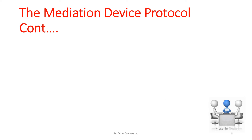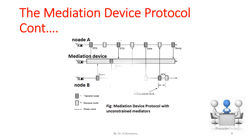Here is the representation of the mediation device protocol. In this, we are having two nodes. In between those two nodes, a mediation device is present. The transmitting node sends RTS to the mediation node and it is being passed to the other node, that is the receiving node.